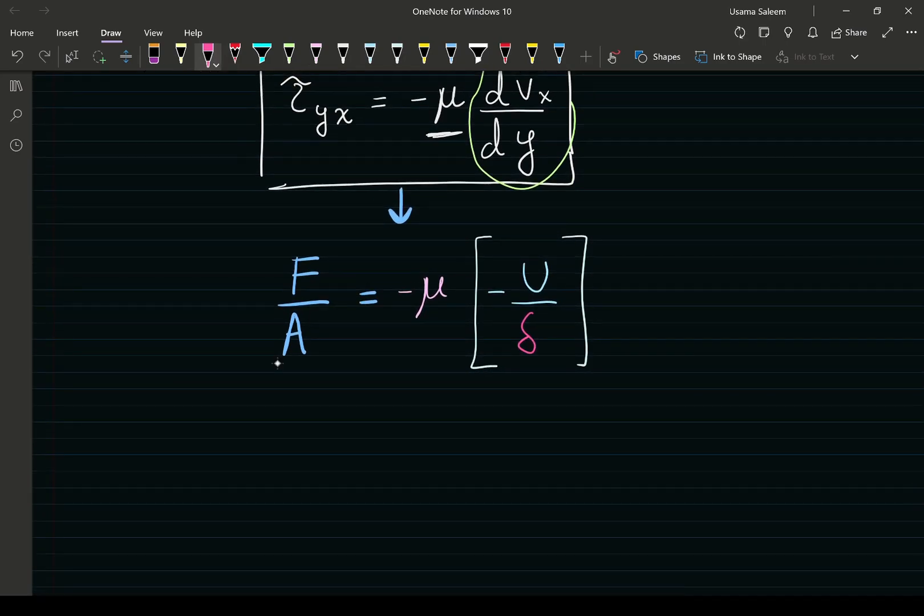Couette flow is an application in fluid mechanics problems where you're trying to figure out the viscosity of a Newtonian fluid. In this case, this becomes force over area equals negative mu times our derivative term, which is negative u divided by delta. The area is the area of the plate that is in contact with the fluid - length times width.